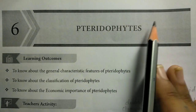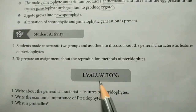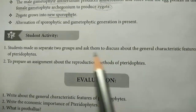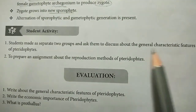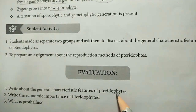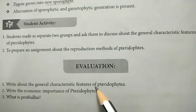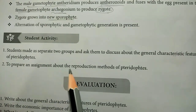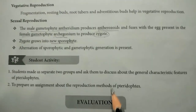Sixth lesson: Pteridophytes. The evaluation includes writing down the characteristic features of pteridophytes as a student activity. Two groups are separated to discuss the characteristic features of pteridophytes. An assignment is to be prepared about the reproduction method of pteridophytes.